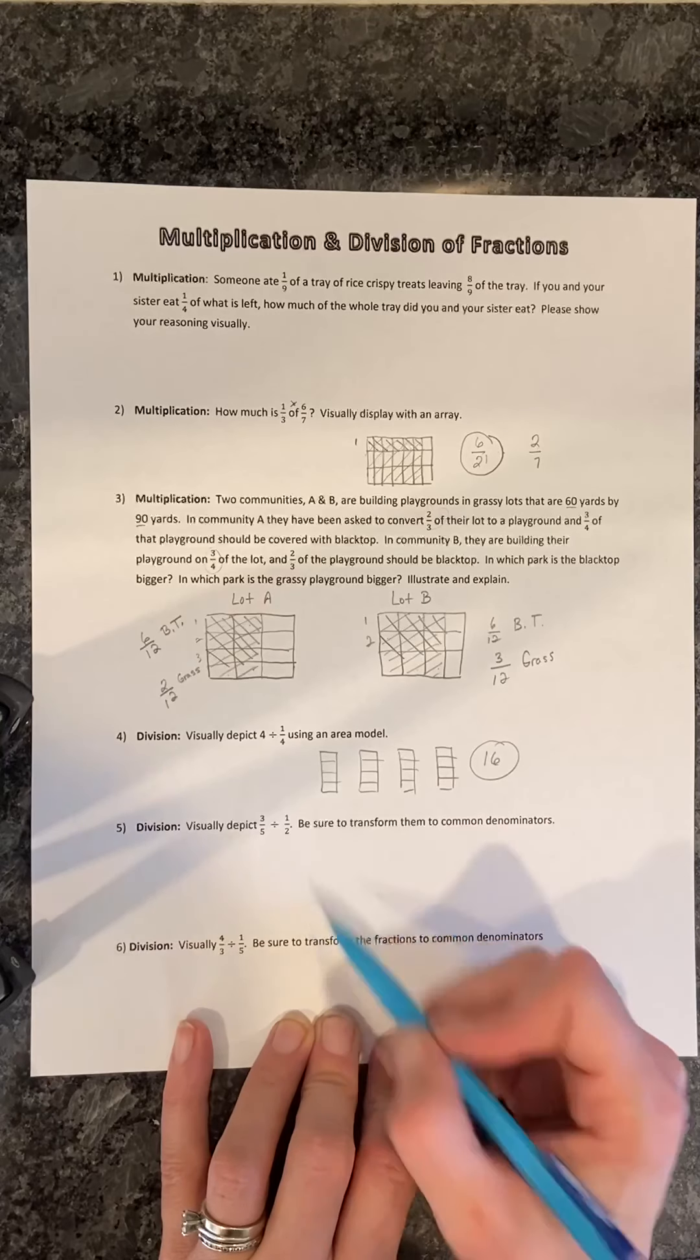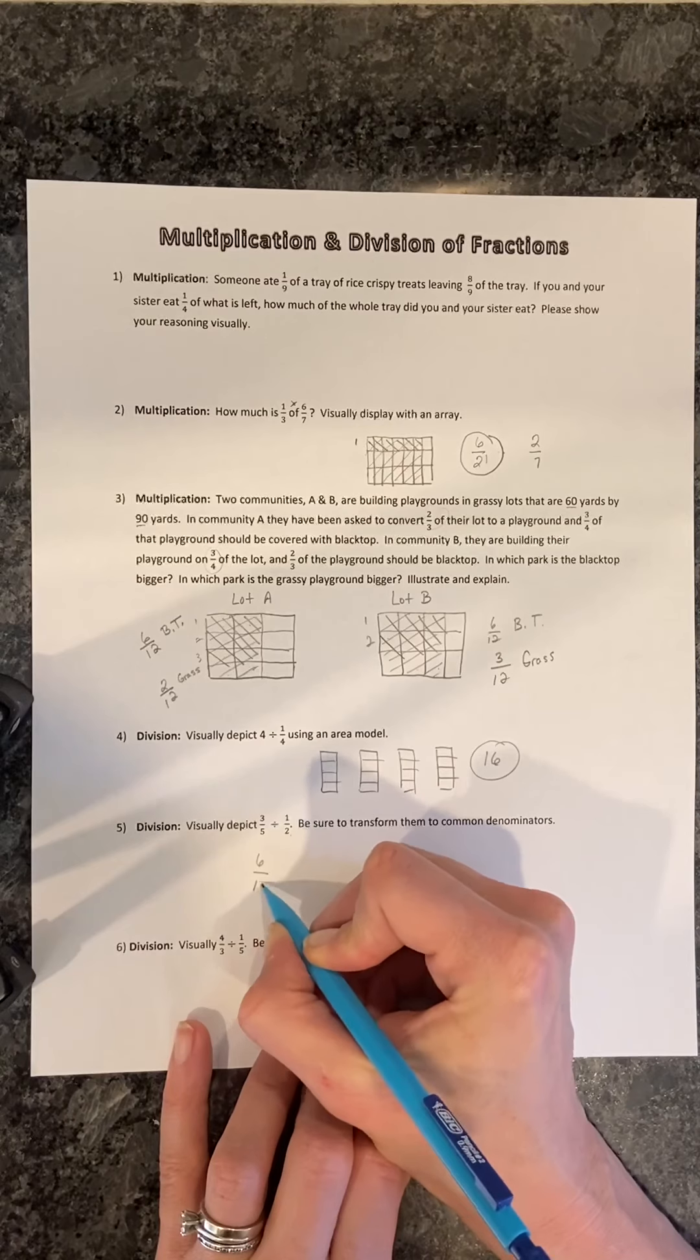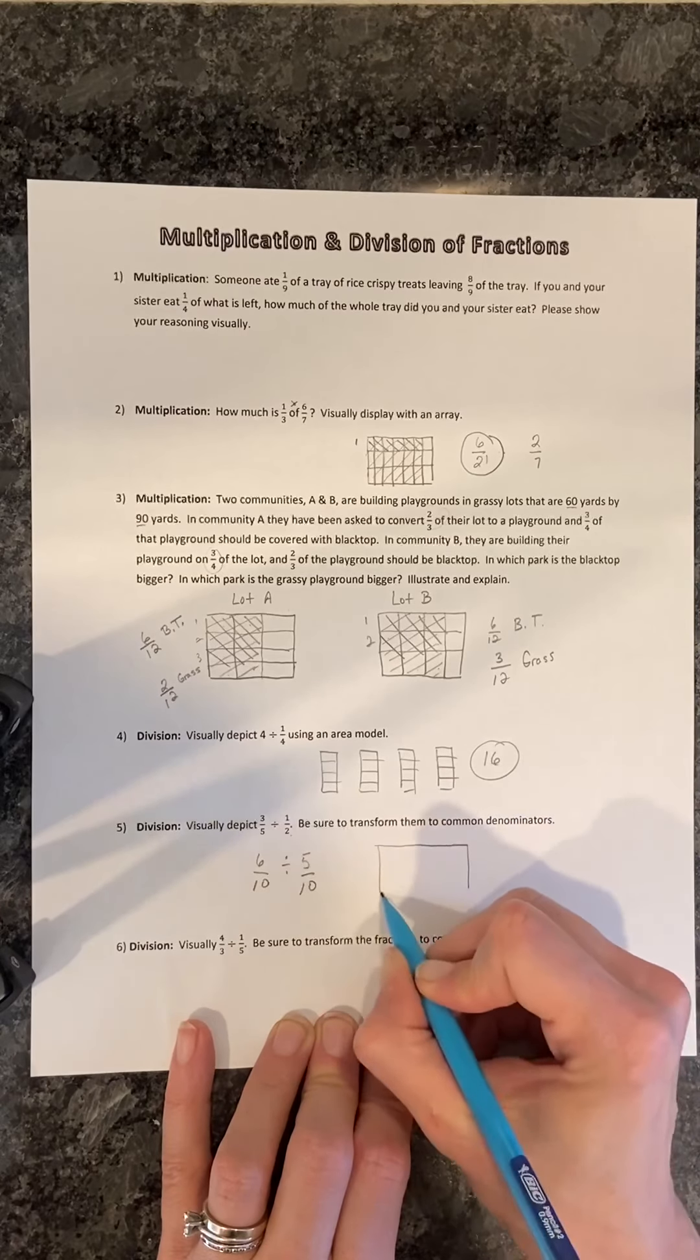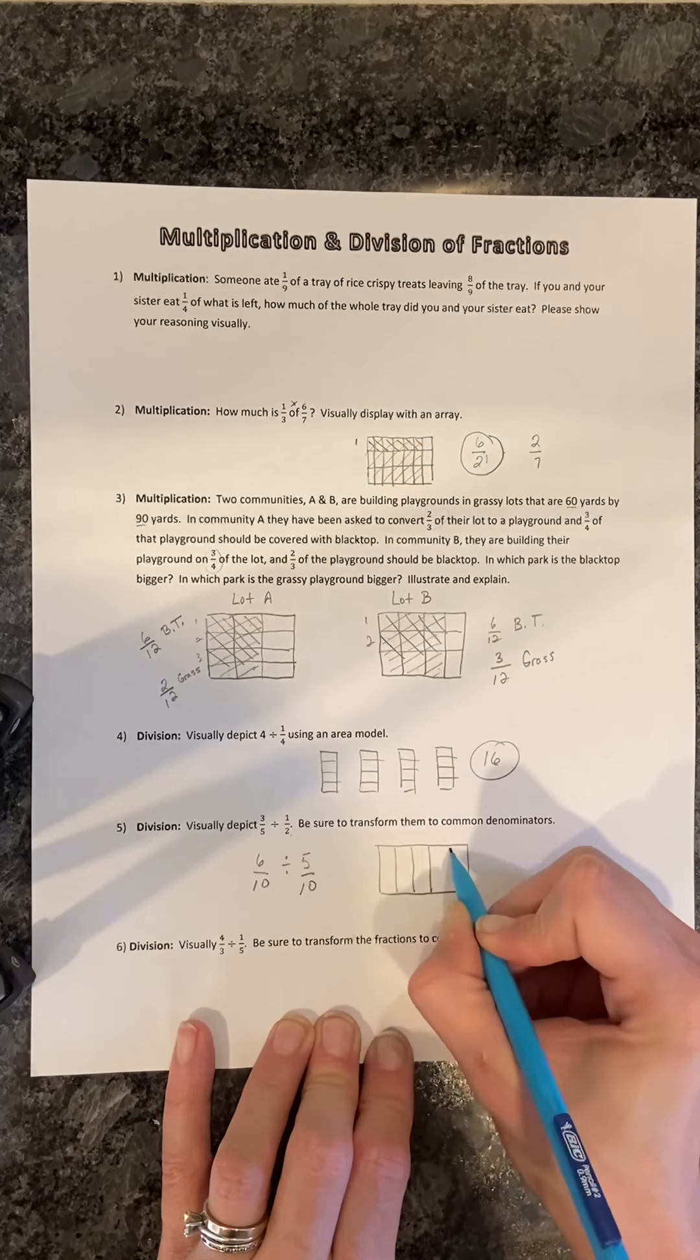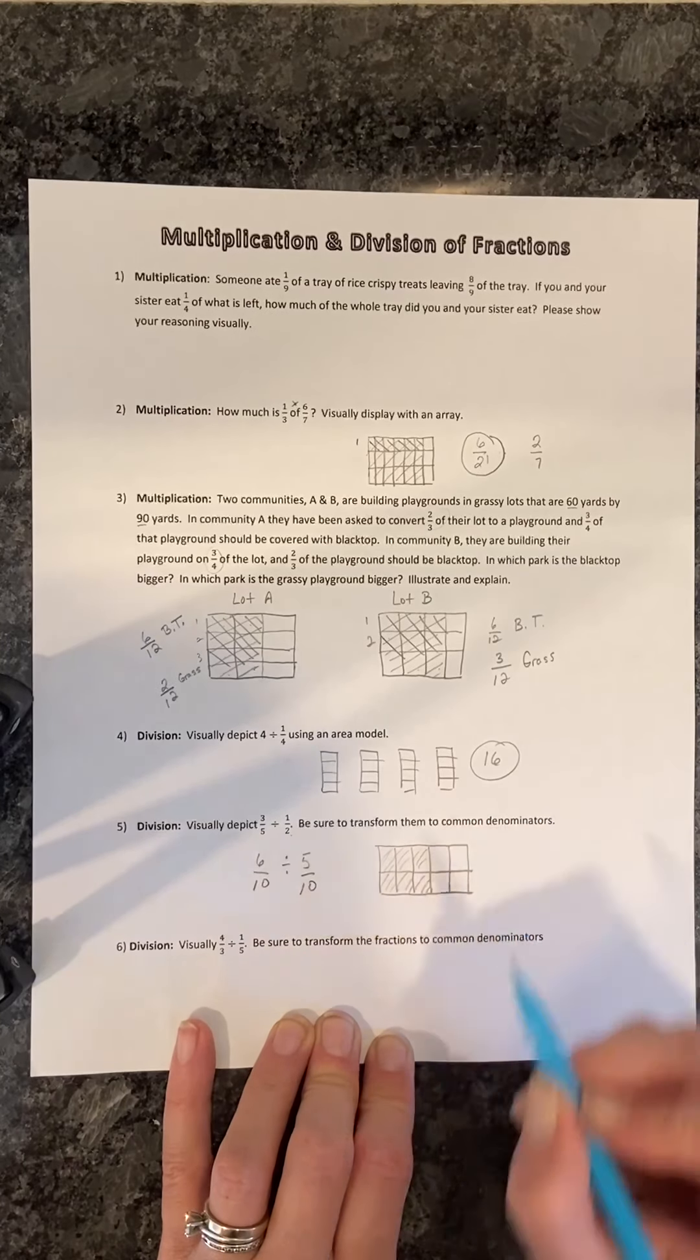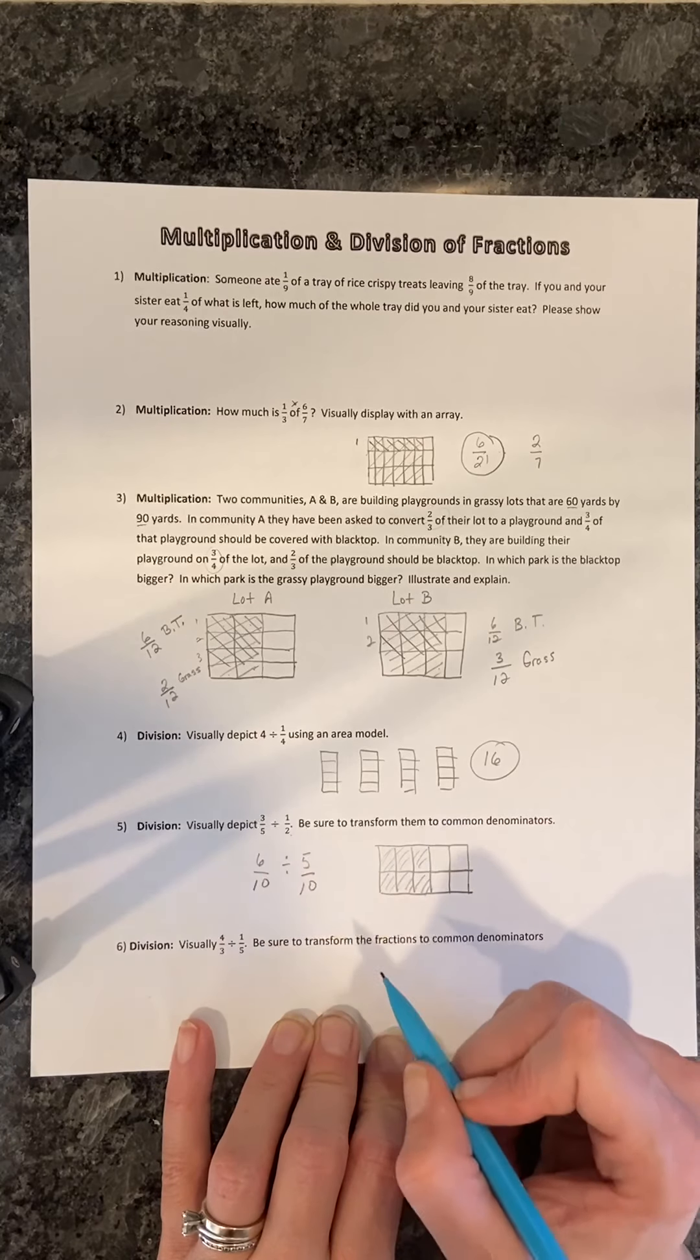Now we're asked to visually depict three-fifths divided by one-half, and we are told to be sure that we transform to common denominators. Well, the common denominator for five and two would be ten, so we'll change three-fifths to six-tenths, and one-half to five-tenths. And we need to depict six-tenths firstly. So I'm going to go ahead and just split this into fifths, and then cut it in half. And I need to shade in six of these.